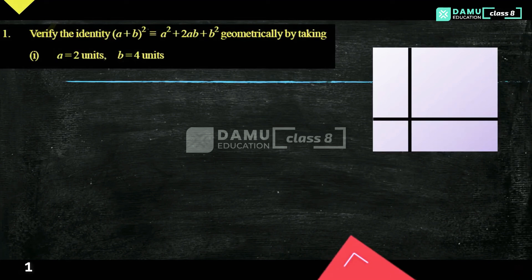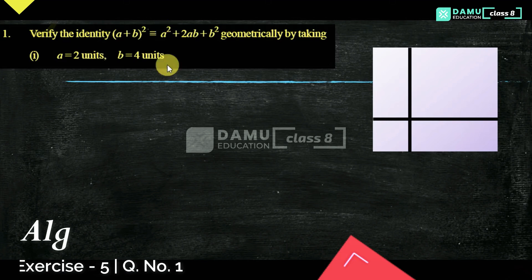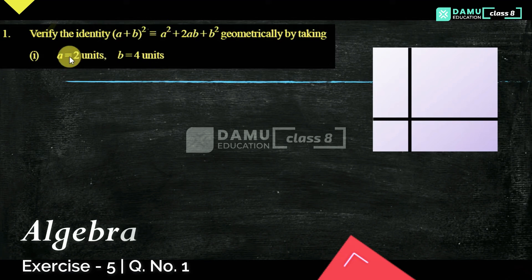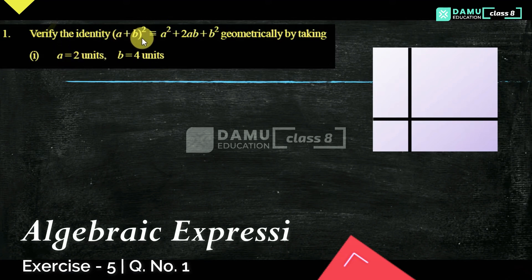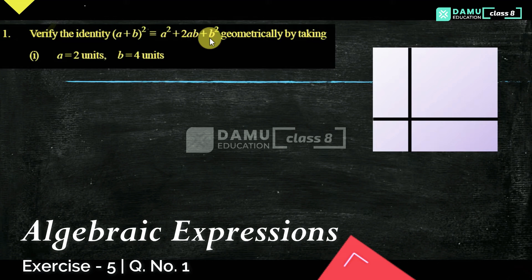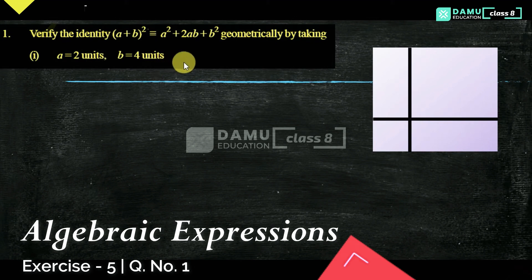Thanks for watching. If you have not subscribed, please subscribe and click the bell icon. In this module, we are going to verify the identity: (a + b)² = a² + 2ab + b² geometrically, by taking a as 2 units and b as 4 units.